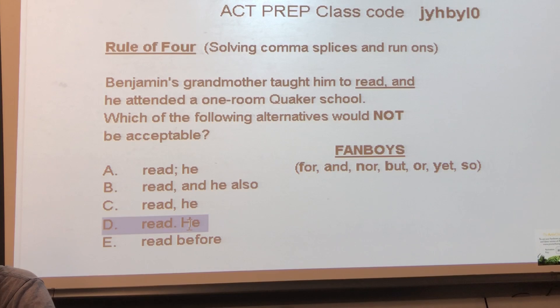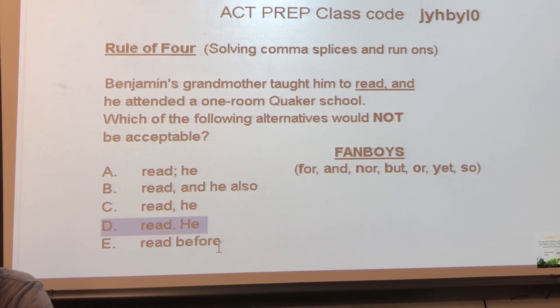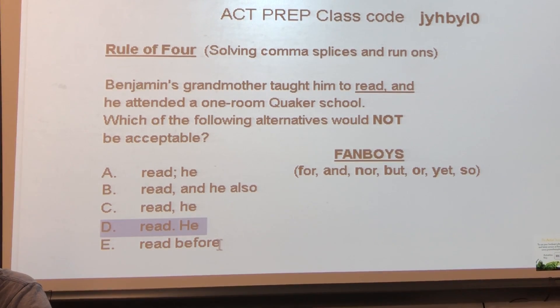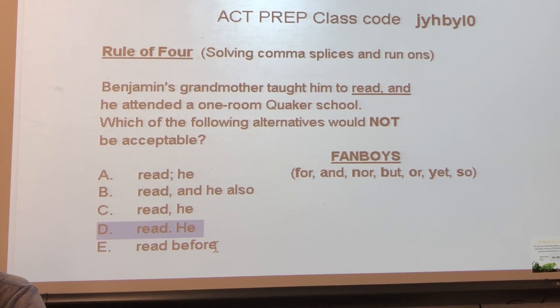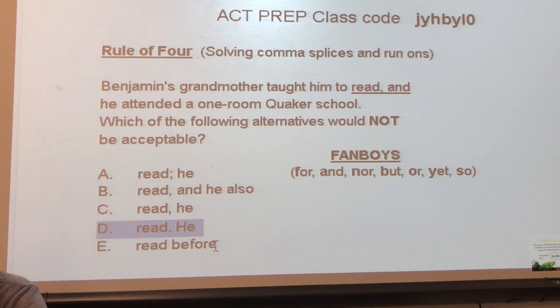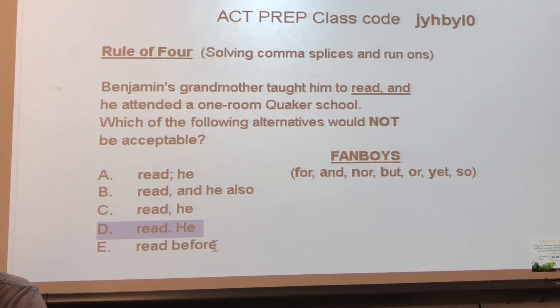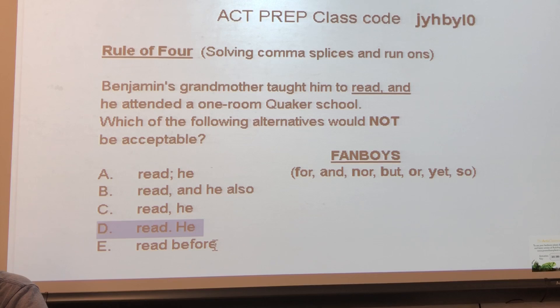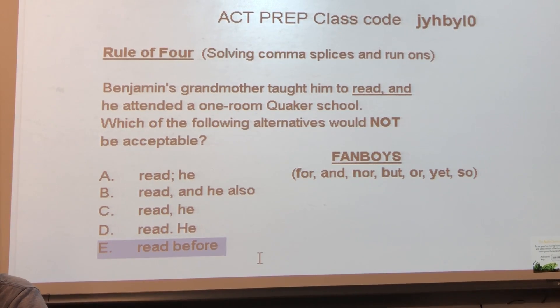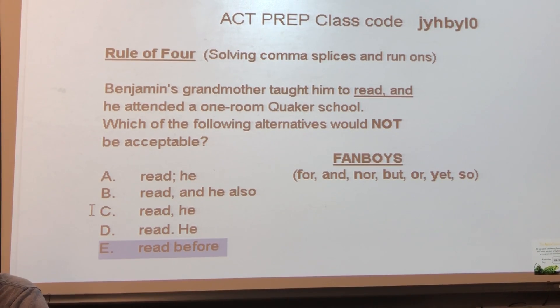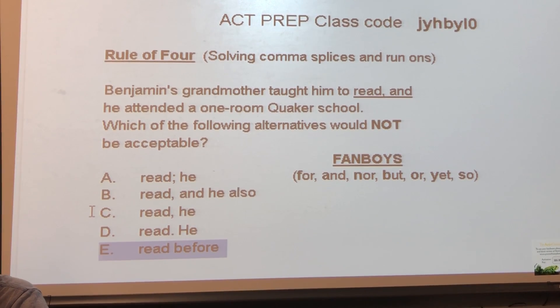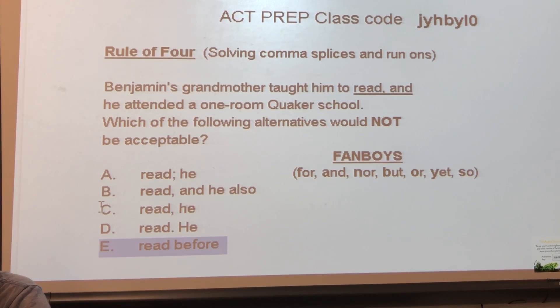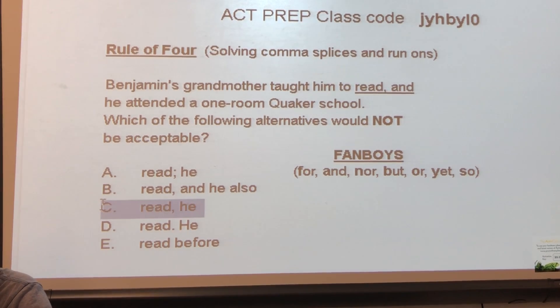D makes the two clauses into separate sentences using a period, which is perfectly acceptable. E turns the second clause into a subordinate clause, which is also an acceptable method. The test taker should choose C.